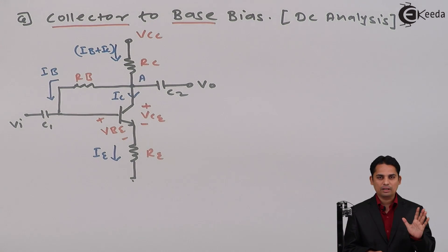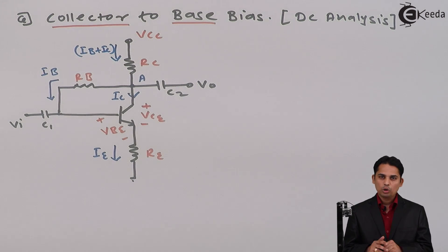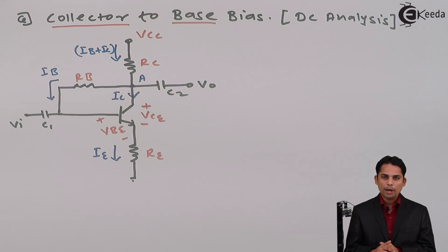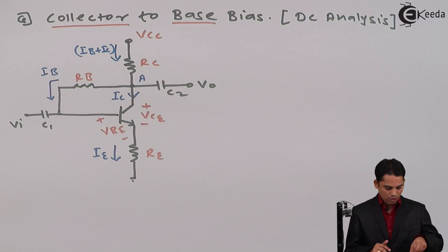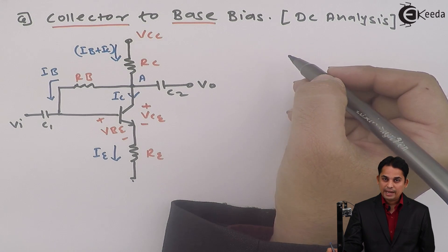Once you have marked the directions of current and the different values of voltages, we need to apply three steps. Step 1 is to apply KVL to the input in order to get base current IB. Step 2 is to get the value of collector current from base current. Step 3 is to apply KVL to the output in order to get VCE. We will also write the relationship between IB, IC, and IE.